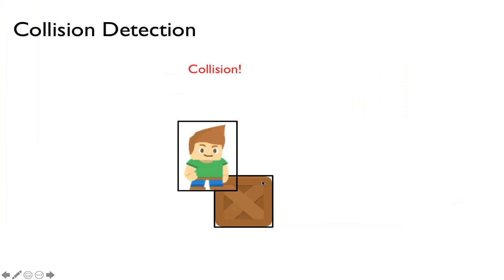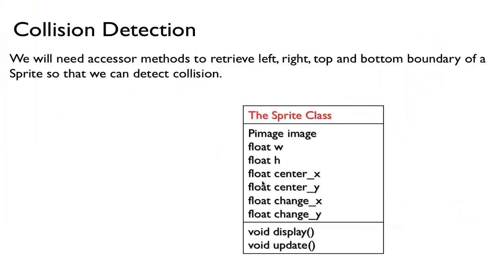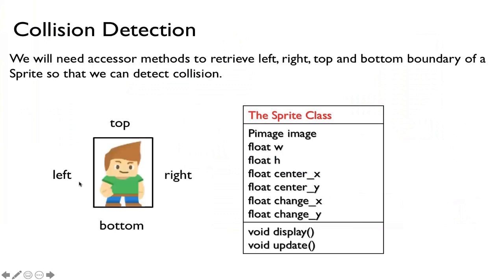So here we have two sprites. They are colliding in one case, whereas we don't have collision in the other. We want to be able to write a method that can detect that. Remember that we wrote the sprite class a few videos ago and we have variables: the width, the height, the center, the velocity, and methods for displaying and updating. But we also need accessor methods to retrieve the left side, the right side, the top, and the bottom of the sprite so that we can detect collision.